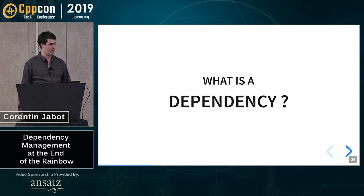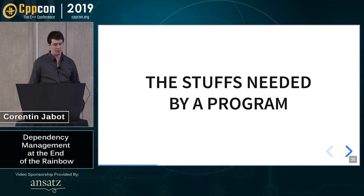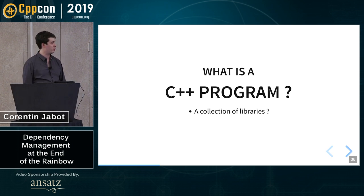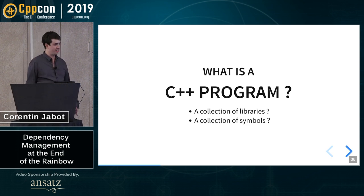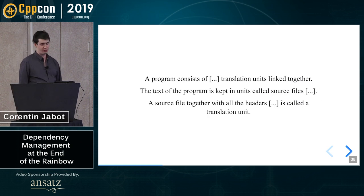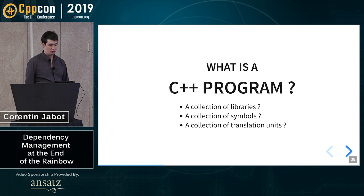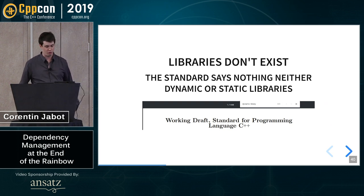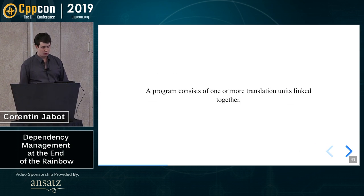Let's start at the beginning. What's a dependency? A dependency is the stuff you need to make a program. But what's a C++ program? It's also a really complicated thing to define. Maybe a program is a collection of libraries — that's how many people see a C++ program. Maybe it's a collection of symbols — if you are a loader on your system, the loader thinks a program is a collection of symbols. What does the standard say? A program is a collection of translation units, and translation units are made with source files and header files.